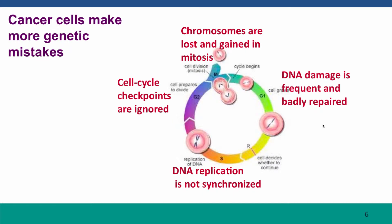This occurs not just because of mutations happening at the normal rate, but because cancer cells have higher mutation rates than normal cells — they make more genetic mistakes. We can tabulate the ways they go wrong. For one thing, DNA damage occurs more often in cancer cells, perhaps partly because they're growing fast, partly because they're growing under conditions that are suboptimal.